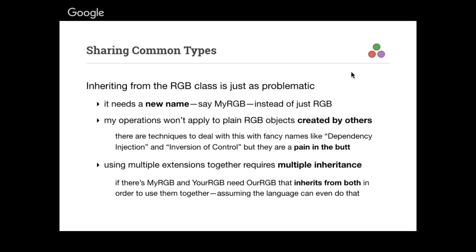If there are multiple extensions — MyRGB and YourRGB — and you want to use them together, you have to create a new type using multiple inheritance called OurRGB that inherits from both. That assumes your language can even do that — many object-oriented languages don't support multiple inheritance.